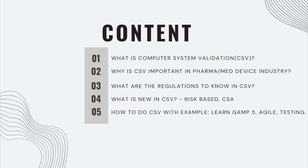I want to present this course in five modules. These are the five things we are going to cover: number one, what is computer system validation; number two, why is computer system validation important in pharma, medical device, and biotechnology industry; number three, what are the regulations to know in CSV; number four, what is new in computer system validation — risk-based CSV and CSA, computer software assurance; and fifth, how to do computer system validation with an example covering GAMP5, agile, and testing.